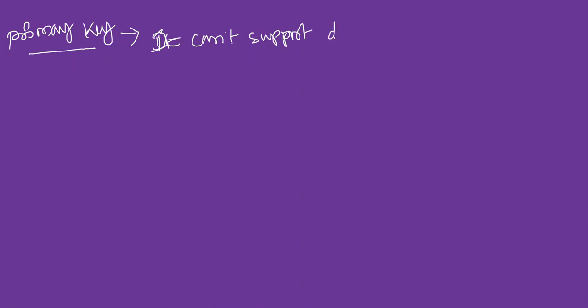Now we have primary key. Primary key cannot support duplicate values and null values. It cannot afford duplicate values or null values — both are not allowed. If you don't have a primary key, then you may have duplicate values or null values.